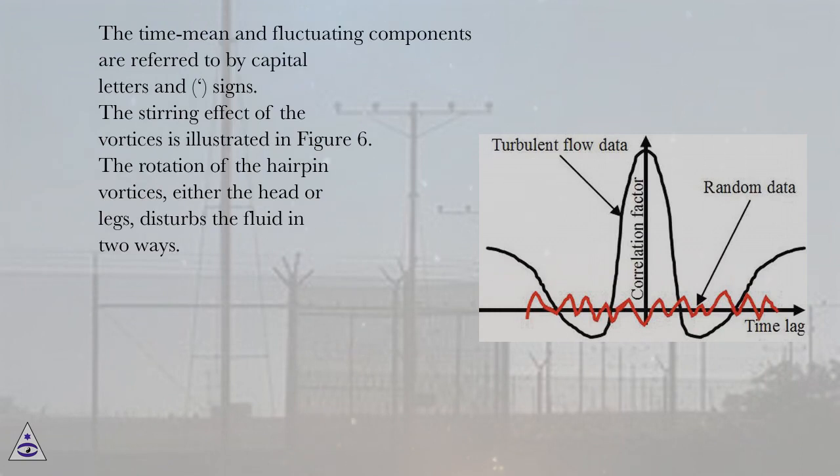The time mean and fluctuating components are referred to by capital letters and signs. The stirring effect of the vortices is illustrated in Figure 6. The rotation of the hairpin vortices, either the head or legs, disturbs the fluid in two ways.